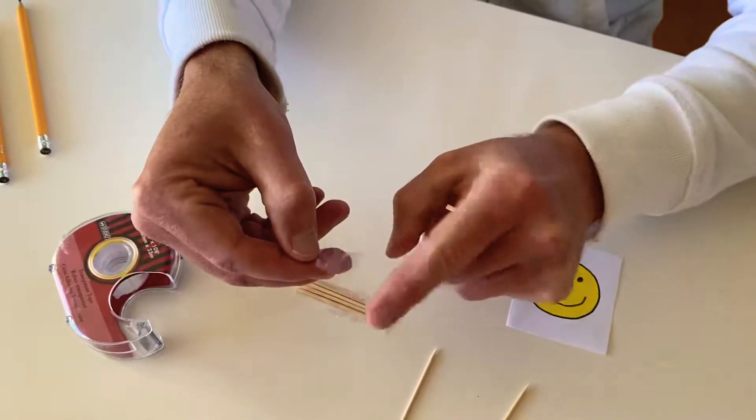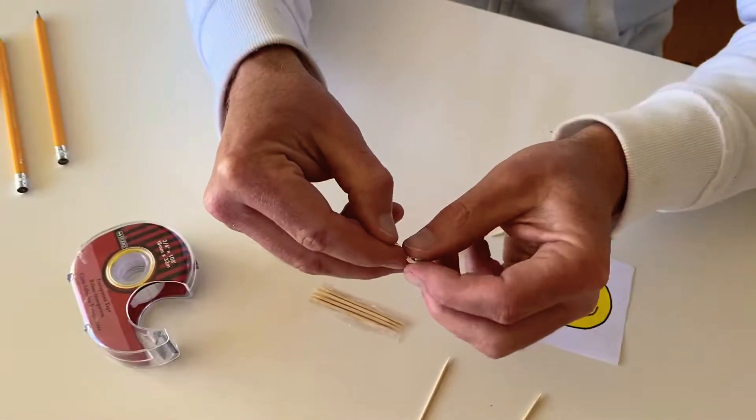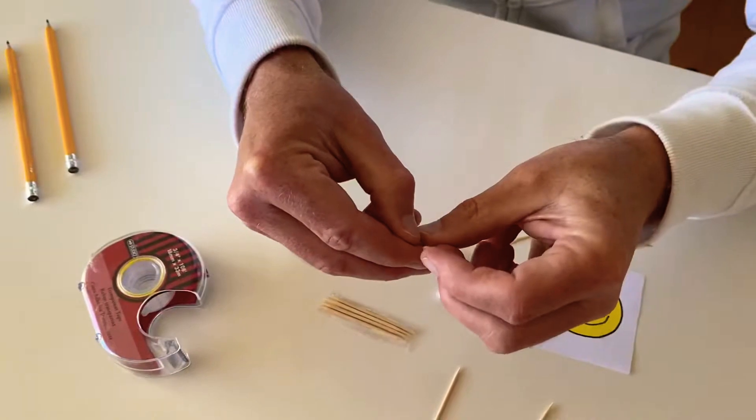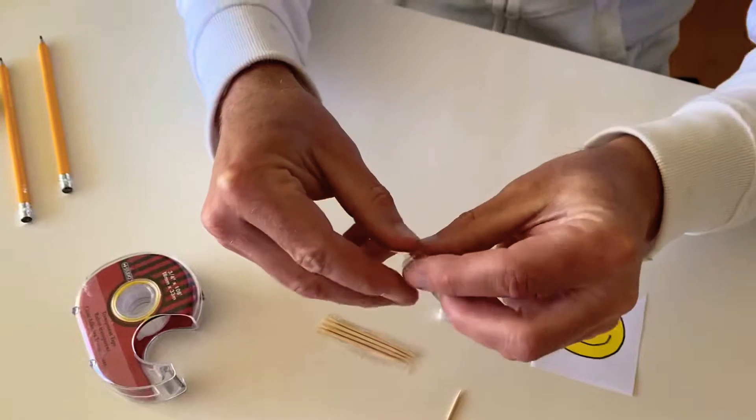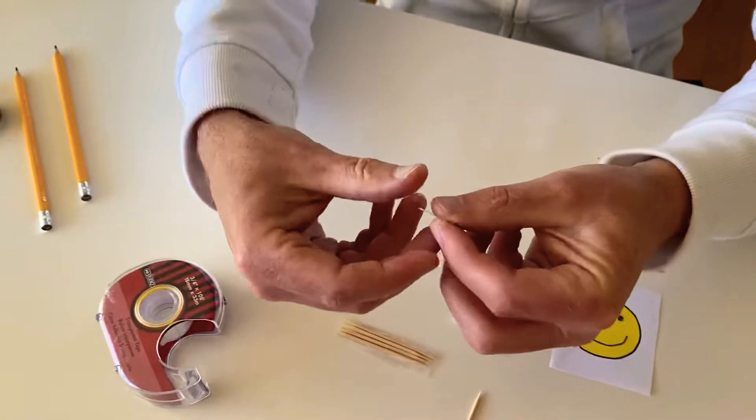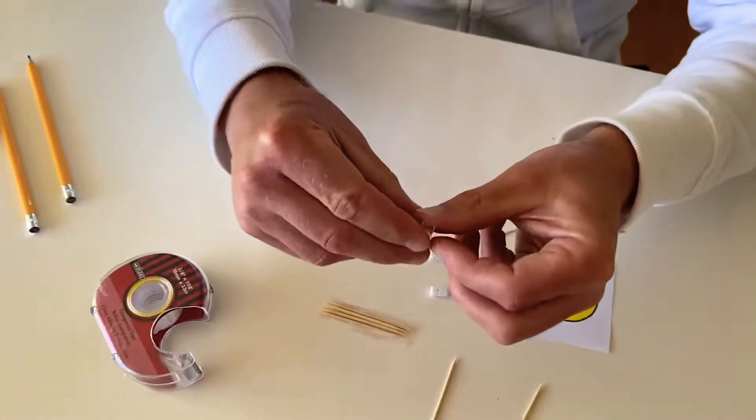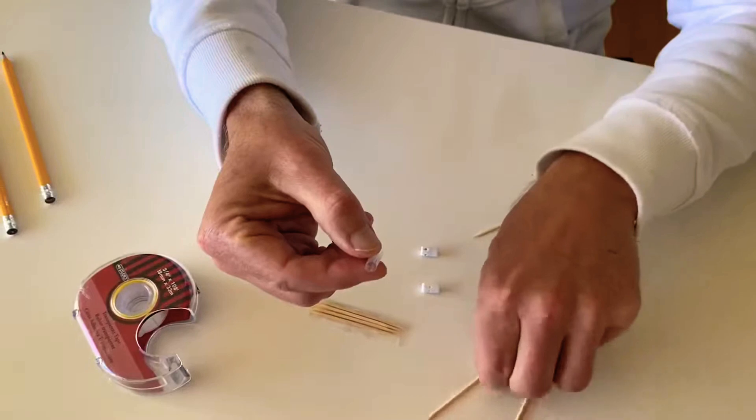Once we roll that over, we're going to have an inside part that's not sticky. Then I just keep rolling the sticky tape around to keep that as a little tube. Then this here will be where I insert my axle.